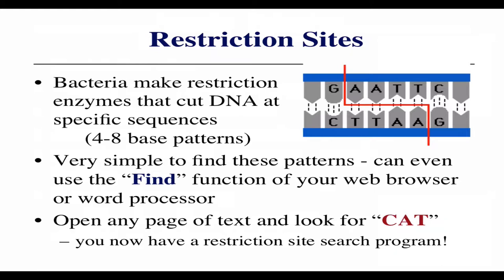Bacteria make restriction sites that cut DNA at specific base sequences. They're four to eight bases long, called restriction sites or restriction enzyme recognition sites. For most enzymes, there is no variability in the site — it is exactly that set of four, six, or eight letters. In theory, you can find a restriction site in a stretch of DNA with a simple exact match of a pattern.